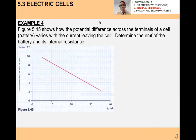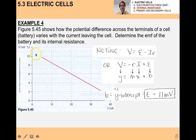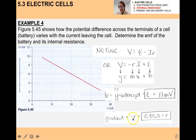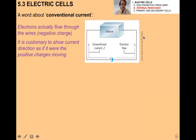Here's an example: a figure shows how the potential difference across the terminals of a cell varies with current. To find the EMF and internal resistance from this graph, rearrange V = ε − Ir into the form y = mx + b. The y-intercept gives you the EMF, and the negative of the gradient gives you little r, the internal resistance. It's that straightforward.